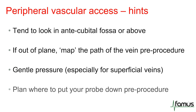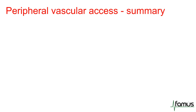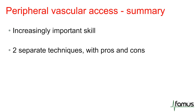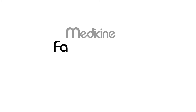Finally, and perhaps most importantly, make sure you plan where to put your probe down before you start the procedure, because there's nothing worse than being in the middle of a difficult cannulation and wondering where to put the probe so it won't fall on the floor. To summarize: peripheral vascular access with ultrasound guidance is an increasingly important skill. We've highlighted two distinct techniques, each with their advantages and disadvantages, but practice will make perfect when finding the one which works for you. We have in this series further videos on the practicalities of peripheral vascular access using both techniques.